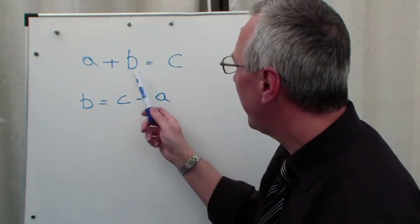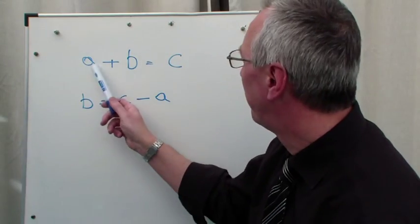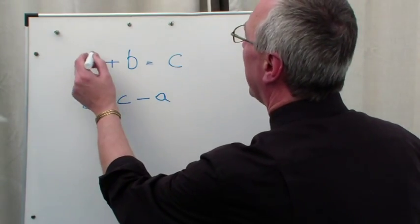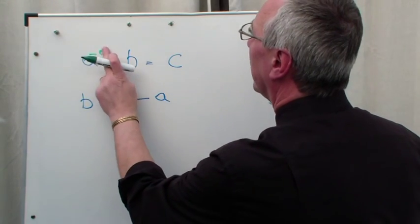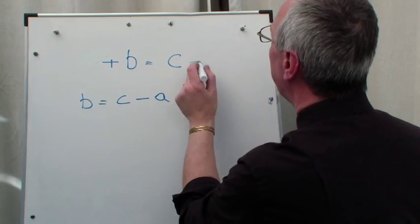If we want to find b on its own, we have to minus a off both sides of the equation. So a minus a cancels out and we're left with b equals c minus a.